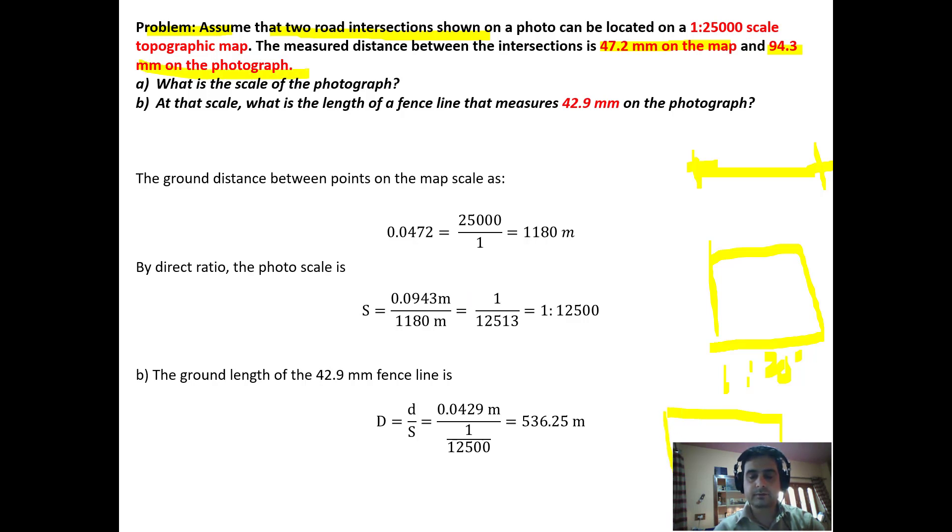The measured distance between the intersections is 47.2 mm on the map and 94 mm on the photograph. You have an image where two points are identified and on the map the same two points are identified. What is the scale of the photograph?